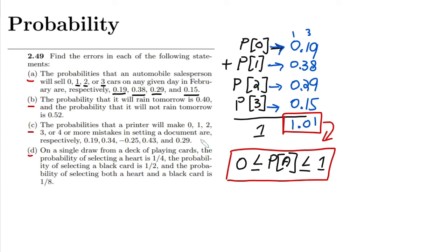Similarly in part B, the probability that it will rain tomorrow is 0.40 and the probability that it will not rain tomorrow is 0.52. Again, we have the probabilities of two events.